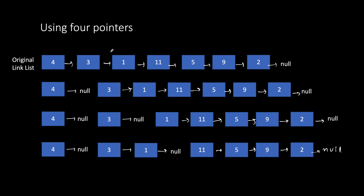Let's look at the four-pointer solution. We have been given the head of the original linked list, and we can prepare two linked lists: the first contains all elements less than x, and the second contains all elements greater than or equal to x. Whenever we encounter an element less than x we append it to the end of the first linked list, and if we get an element greater than or equal to x we append it to the end of the second linked list.